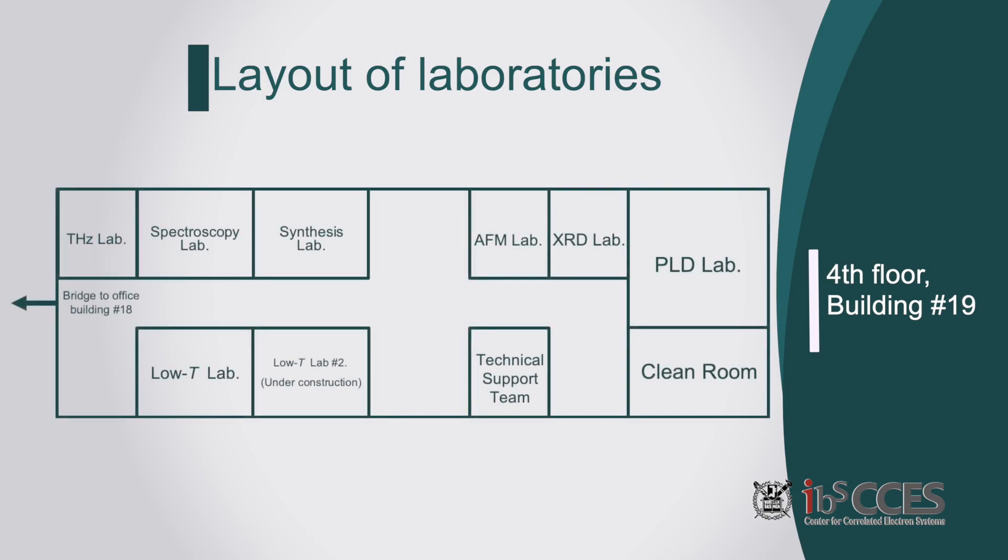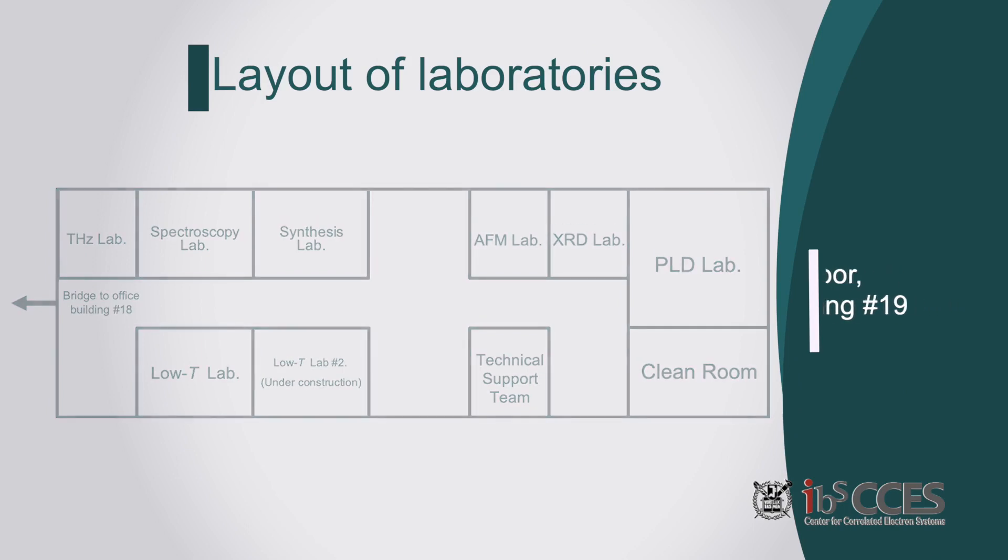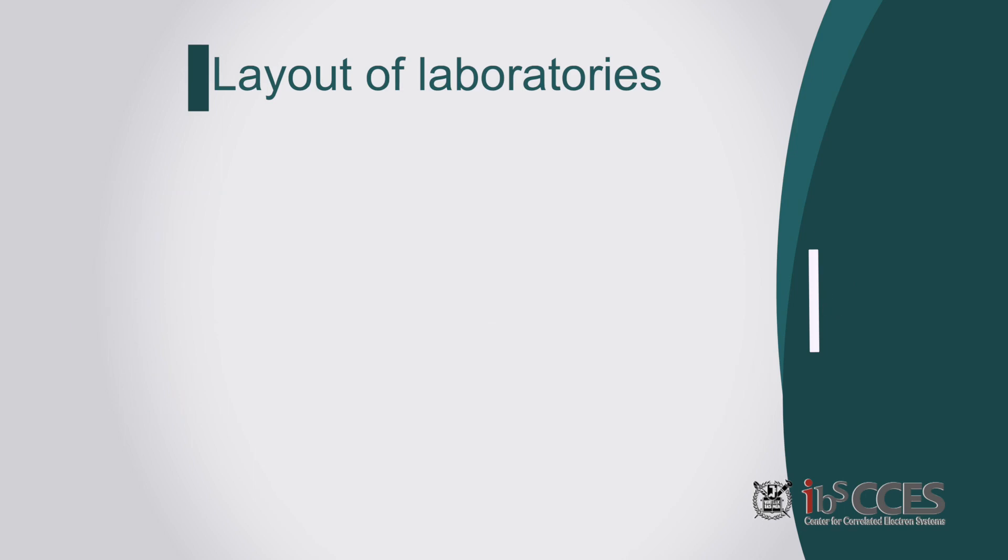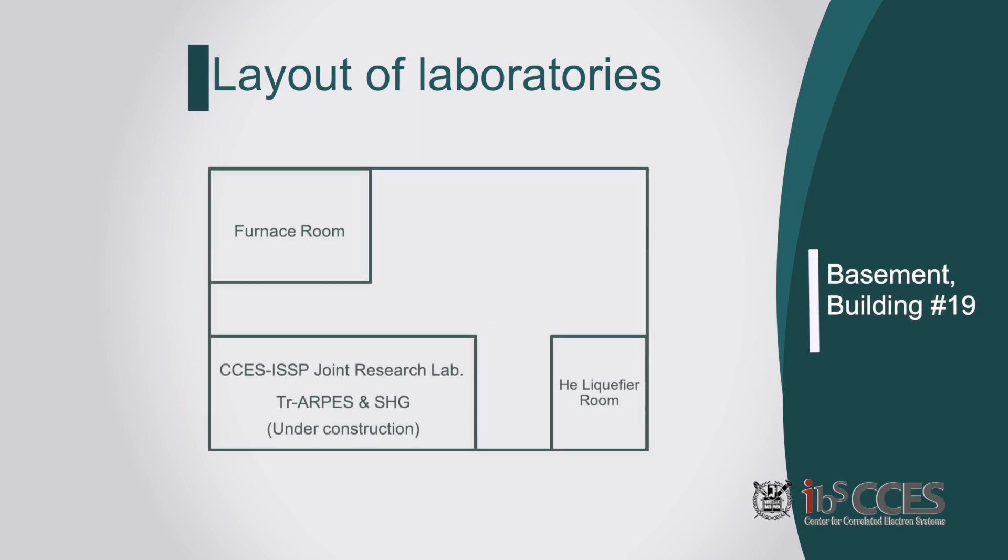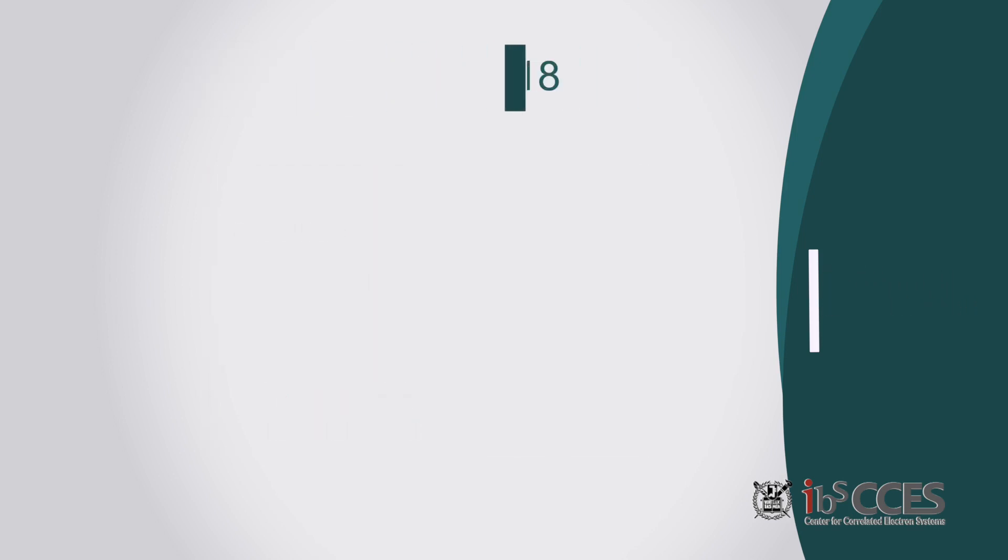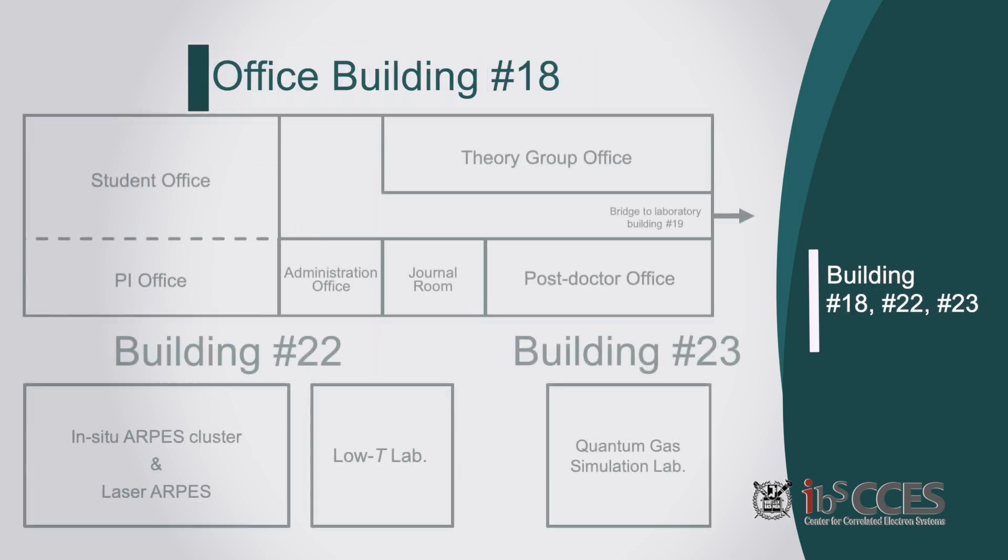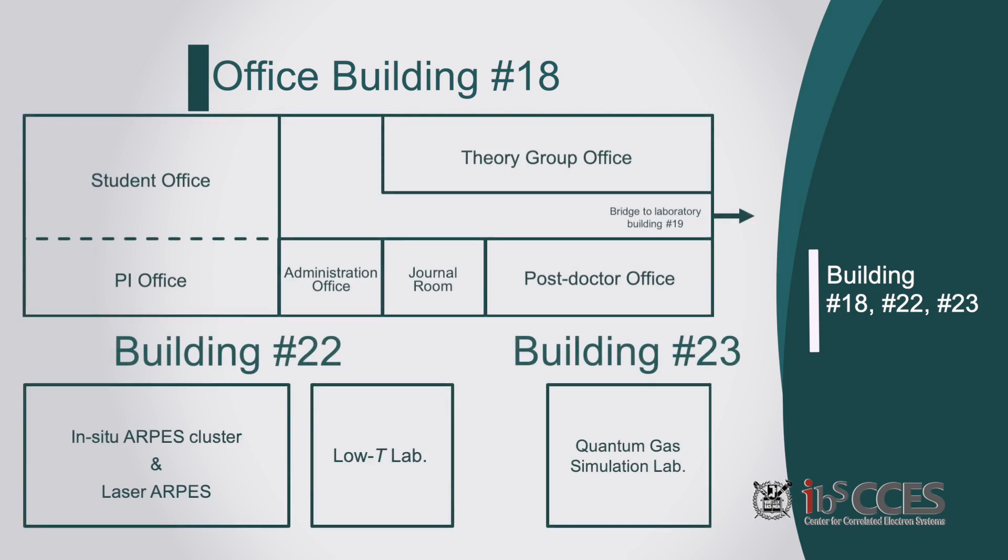The sample synthesis, characterization, device fabrication, low temperature and optical measurement systems are all located on the fourth floor of Building 19. At the basement of Building 19, we are building CCS ISSP Joint Lab. Time-resolved ARPES and SHG systems are currently under construction. Furnace and helium liquefier rooms are also located on the same floor. The student and researcher office are located at Building 18, directly connected to Building 19.